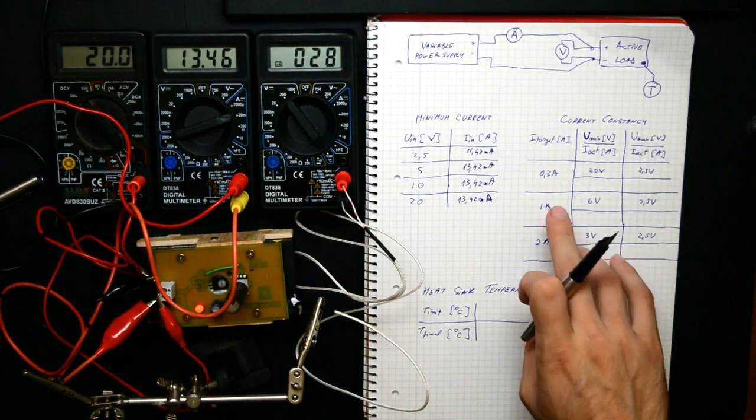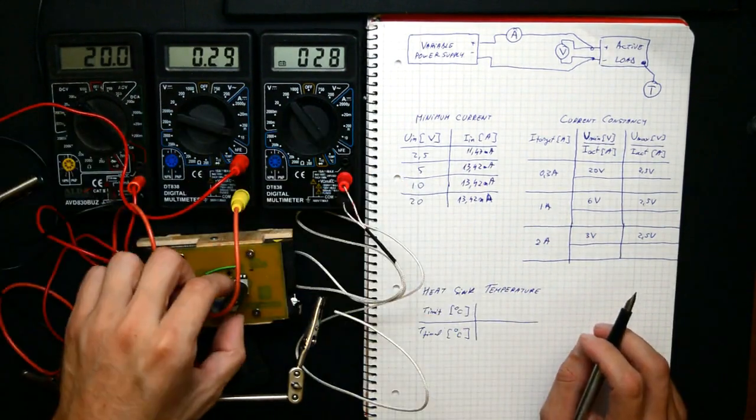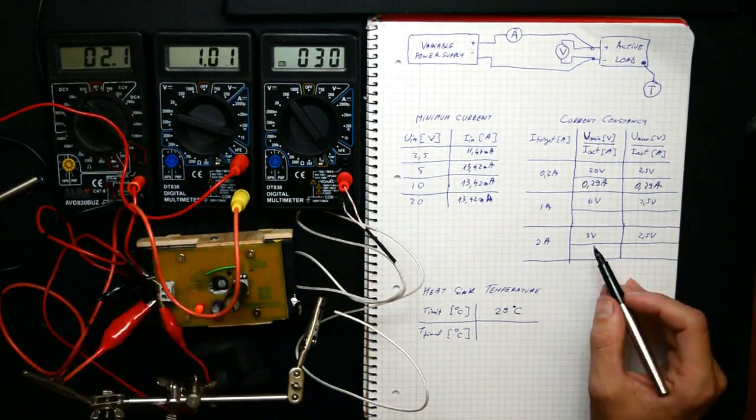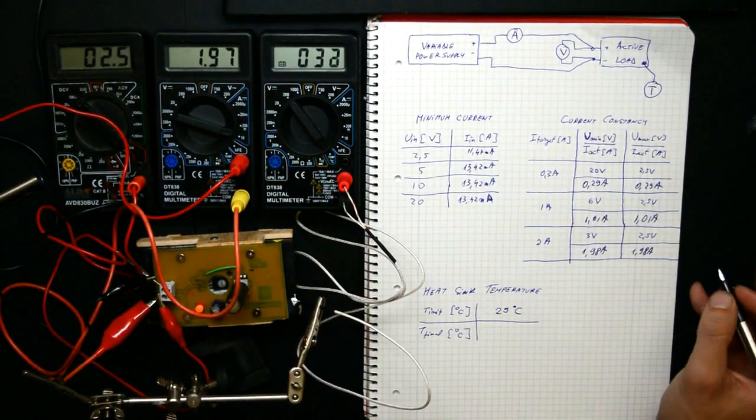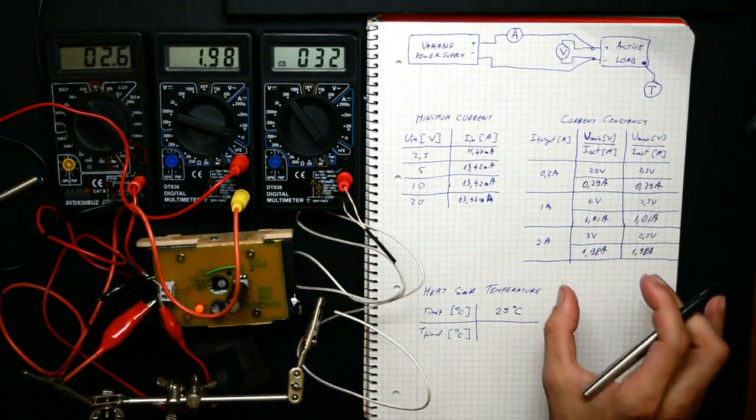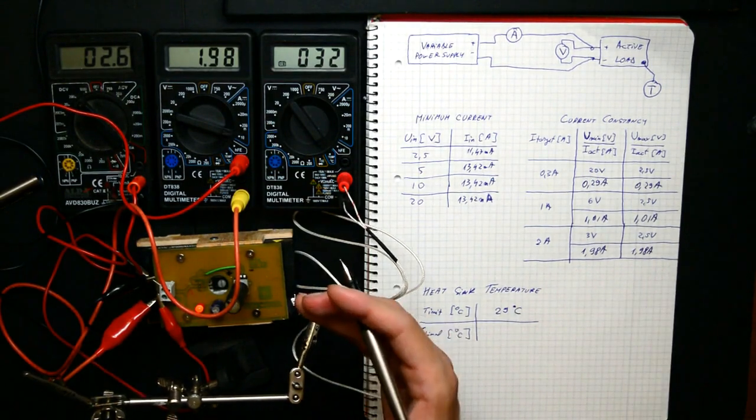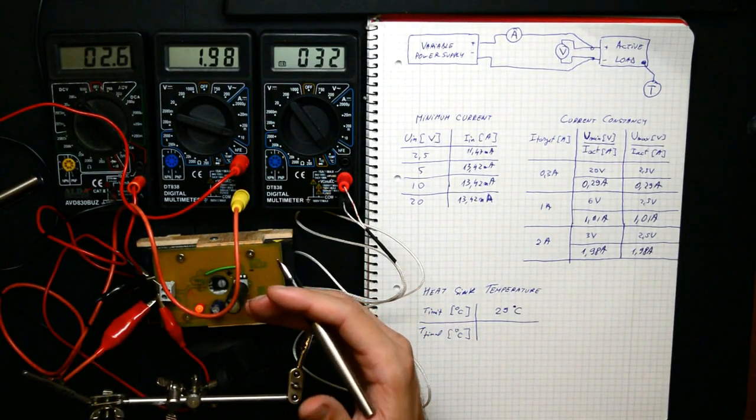For this we will set a certain current at certain voltage, change the voltage, and see if the current changes. It shouldn't, but we need to make sure. So we see that the current remains constant throughout the voltage range. Our circuit is working as a constant current sink.